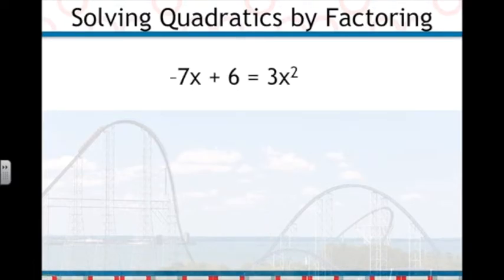For this example, negative 7x plus 6 equals 3x squared, we again need to get it equal to 0.